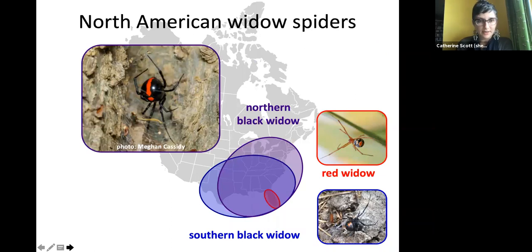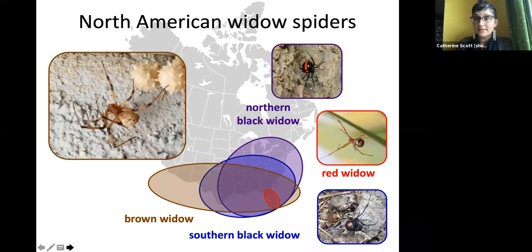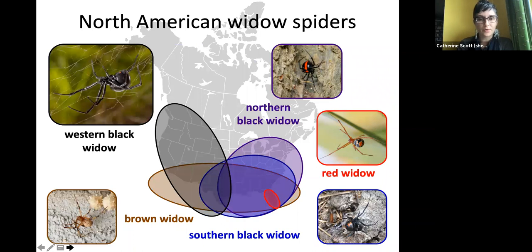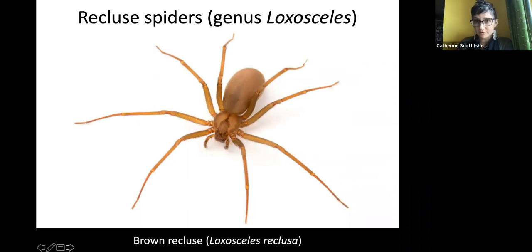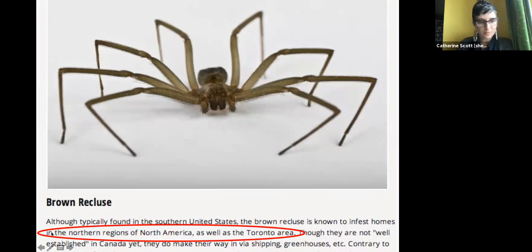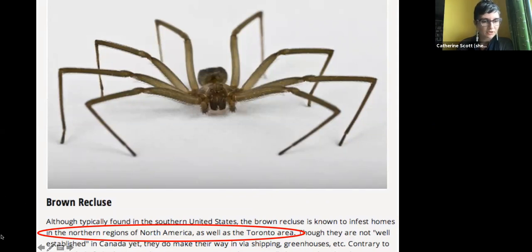In North America there are several black widow species: the southern black widow in the southern US, the red widow endemic to Florida, the northern black widow reaching southern Ontario and Quebec, the introduced brown widow across the southern states, and the western black widow ranging from Mexico up to southern British Columbia, Alberta, and Saskatchewan. In North America there's also the recluse spiders in genus Loxosceles — but we don't have these in Canada, despite what some pest control companies claim.